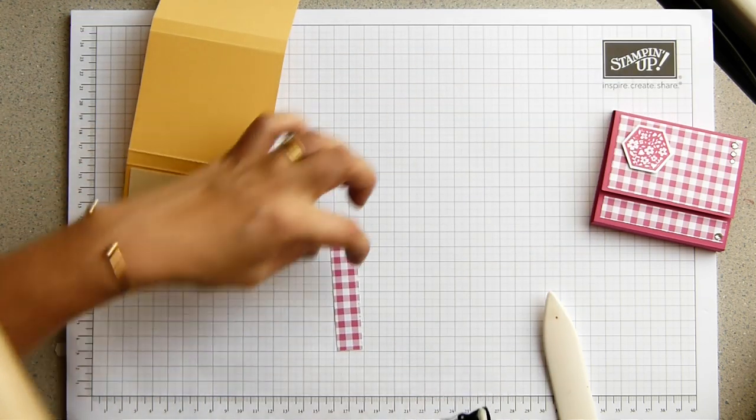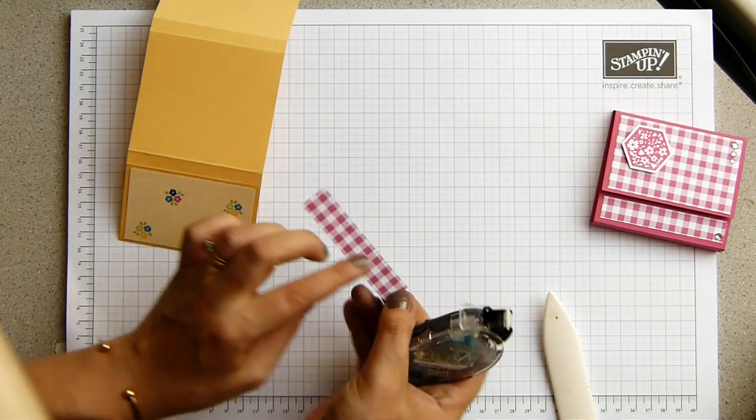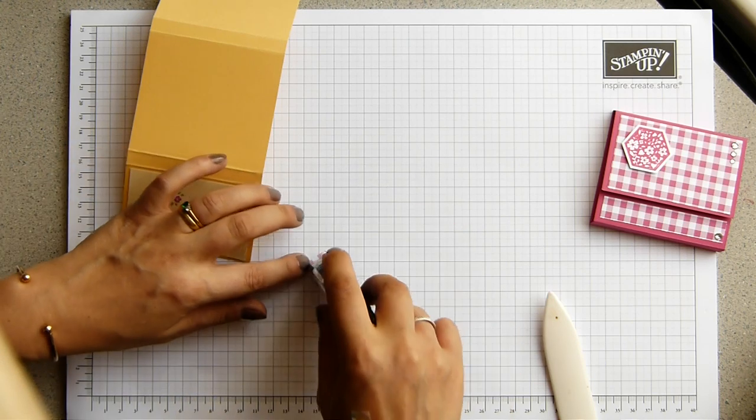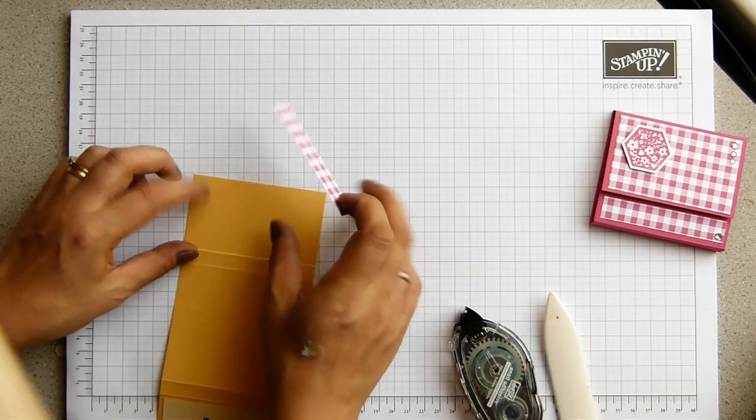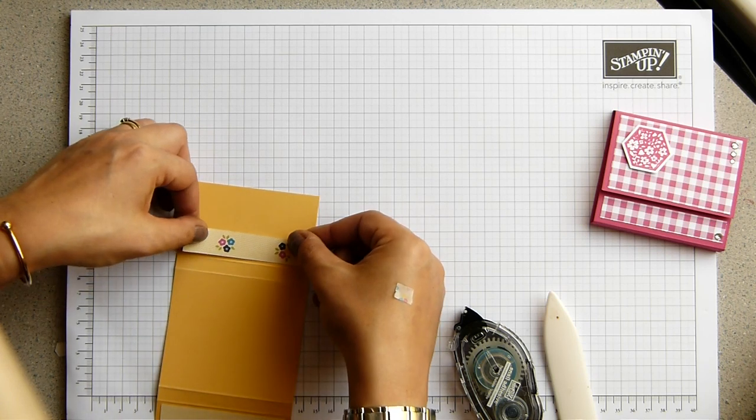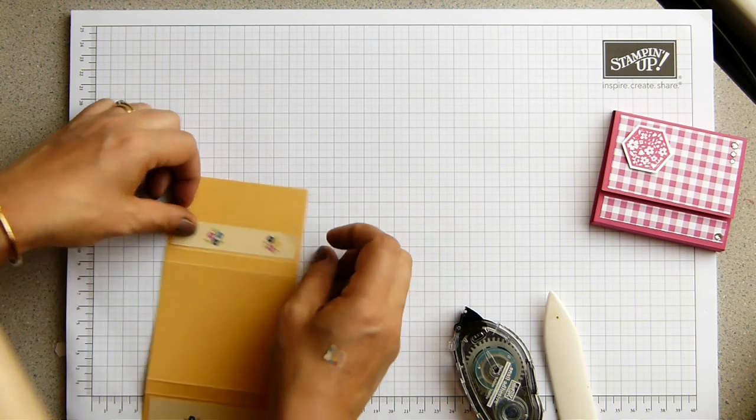And then I've got another piece here that measures five-eighths of an inch, it's very, very narrow, by three and a quarter. So it's the same width but obviously less. And that goes on the bottom, kind of equidistant all over.